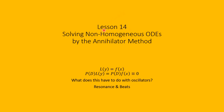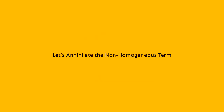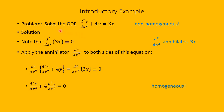Welcome to Lesson 14: Solving Non-Homogeneous Ordinary Differential Equations by the Annihilator Method. Let's consider an introductory example. Solve the ordinary differential equation: the second derivative of y with respect to x plus 4 times y equals 3x. Because we have 3x here, this is a non-homogeneous ordinary differential equation.